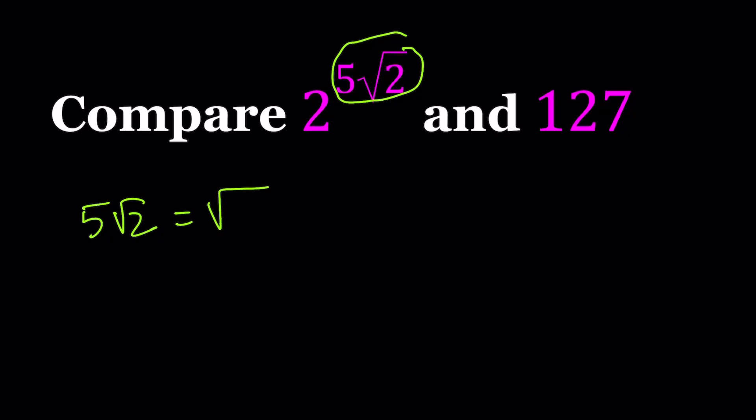5 root 2 is square root of 50, right? I hope you agree on that. And if you don't know how, you can write the 5 as square root of 25 and then just multiply the radicals. That's such a weird word. Anyways, so 5 root 2 is the same as square root of 50, which is greater than square root of 49, which happens to be 7.